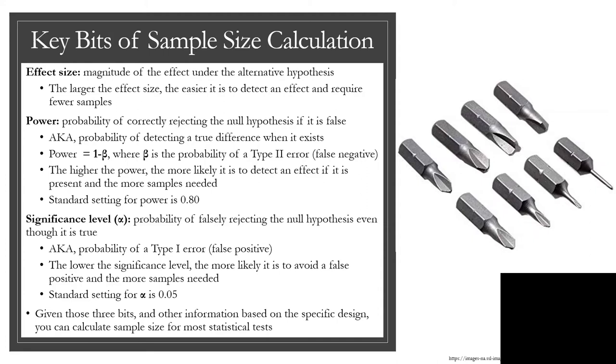Third piece, significance level, also known as alpha. It is the probability of a false positive. Unlike power, with significance level, the lower you have it, the more samples you'll need, because the lower, the more likely it is to avoid a false positive. It has a standard of 0.05, and we will be using that as our default.